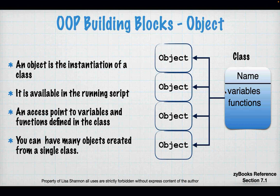The class is the definition — it tells you what you're going to get if you instantiate an object. A class has a name and will contain variables and functions. If a class is only a definition, how do I use it? You do something called instantiation. You tell Python: I have this definition, but I want you to create something with it. That object is available in the running script — it's an access point to the variables and function definitions using dot notation. You can have as many objects of that class as you want.